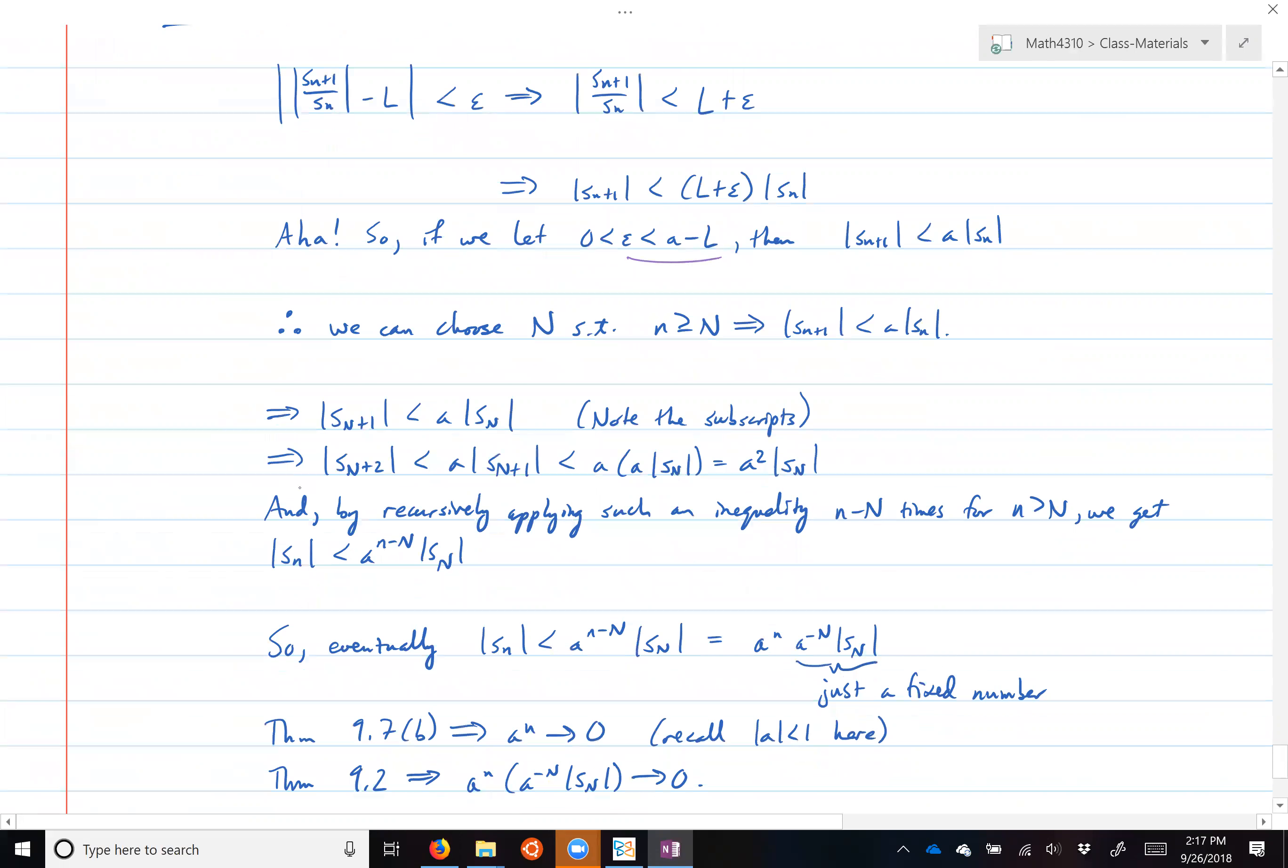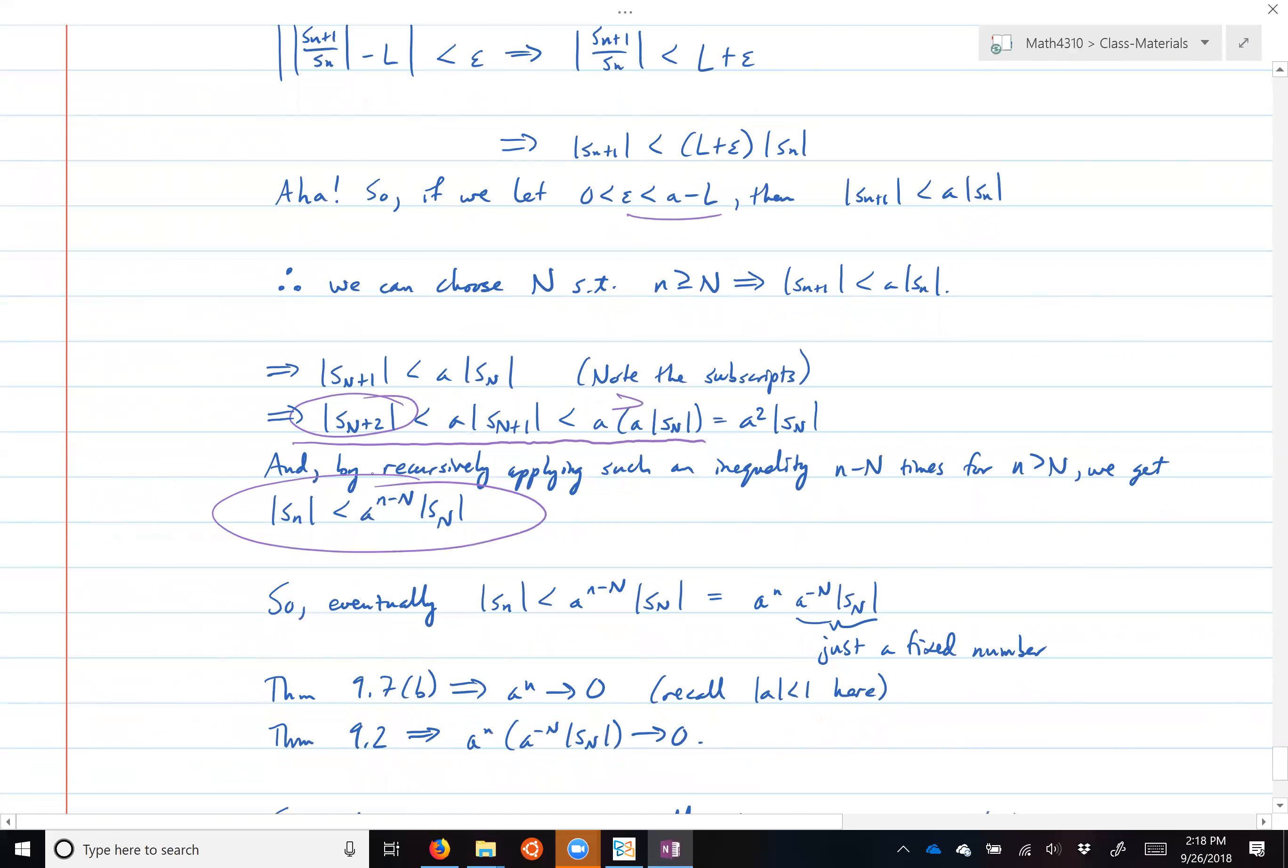So look, that means that |S_N+1| is less than A times |S_N|. But then |S_N+2| is less than A times |S_N+1|, which is less than A times A times |S_N|, because now I'm just putting this inequality in here. And so we're getting towards this relationship where we say if I go two terms beyond S_N, then I have A squared times S_N.